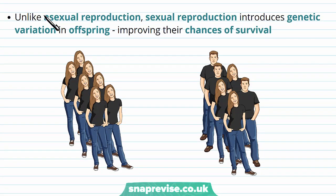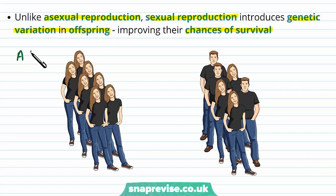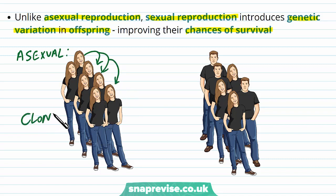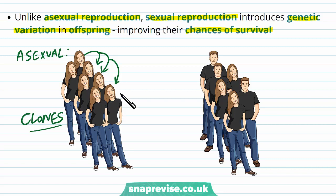There is another type of reproduction known as asexual reproduction, and it has some differences from sexual reproduction. Sexual reproduction induces genetic variation in the offspring from the two individuals, which improves their chances of survival. In asexual reproduction, one individual basically clones themselves to produce an exact copy of their genetic material, so any individual made from asexual reproduction will be a clone of the parent, meaning all offspring would be identical to each other.